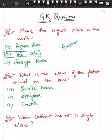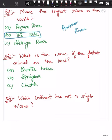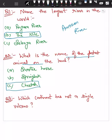Your next question is: what is the name of the fastest animal on land? Your options are Quarter Horse, Springbok, or Cheetah. The fastest land animal is the Cheetah.